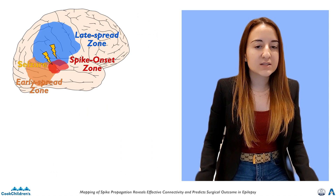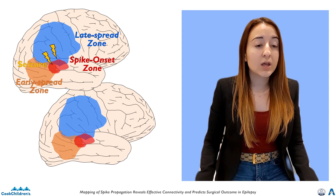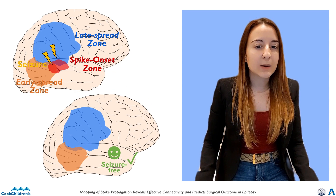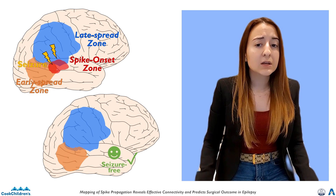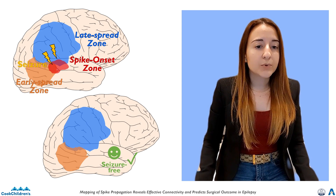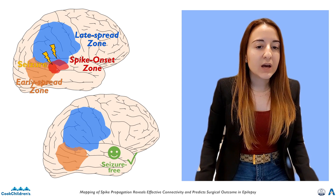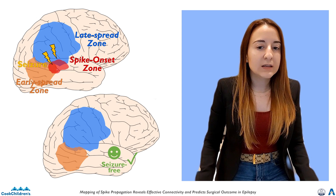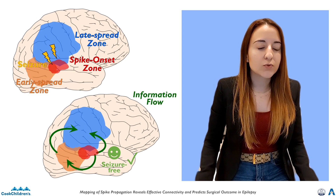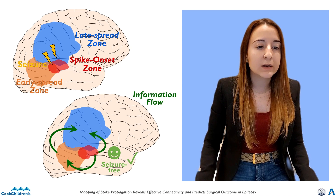Our findings suggest that the spike onset is a reliable estimator in identifying the epileptogenic zone. Removing the spike onset may disrupt the epileptogenic network, and its delineation can improve clinical intracranial reading, reducing the need for prolonged monitoring and enhancing surgical planning. Additionally, our study provides novel insights into epilepsy mechanisms, revealing that epileptic information flows from areas of onset to areas of spread following a hierarchical organization.